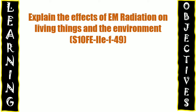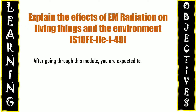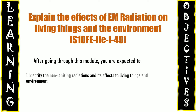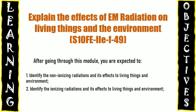For the learning objectives: after going through this module, you are expected to first identify the non-ionizing radiations and their effects on living things and the environment; second, identify the ionizing radiations and their effects on living things and environment; and third, find out solutions on how to reduce electromagnetic radiation hazards. This module is divided into three parts: lessons one, two, and three.